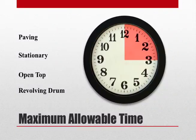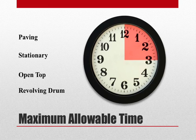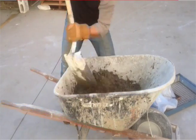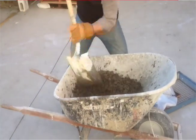For each of these mixers, the maximum allowable time between obtaining the first and final portion of the sample is 15 minutes. When sampling from a paving mixer, the concrete is deposited on grade and then five or more portions are obtained. These portions are recombined to create the composite sample.